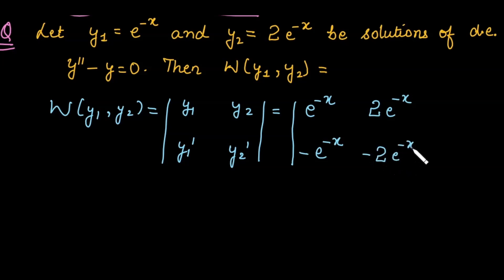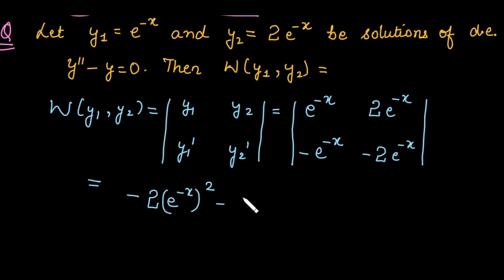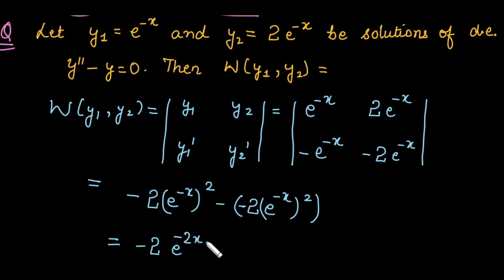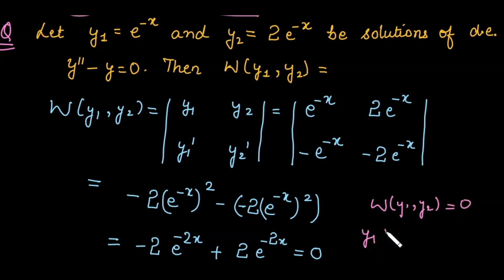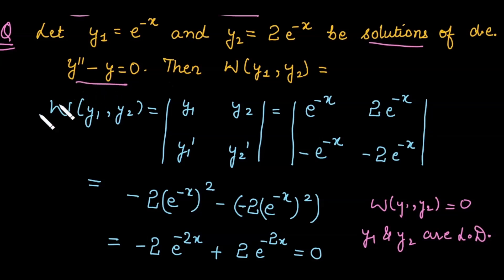Computing the determinant: e^(-x) · (-2e^(-x)) minus (-e^(-x)) · 2e^(-x), which equals -2e^(-2x) + 2e^(-2x) = 0. Since the Wronskian is equal to 0, we conclude that y1 and y2 are linearly dependent functions — that is, they are linearly dependent solutions of this differential equation.